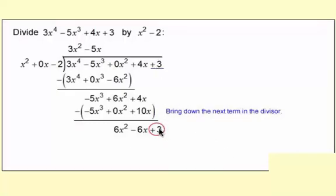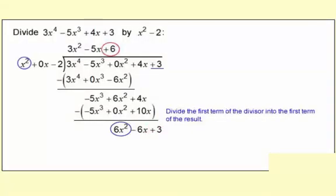Bring down the next number, 3. Now, this is the last one, so there's going to be one more division step here. We have the x² and the 6x². 6 goes in there, so 6 is up top, and that's the third term of your quotient.